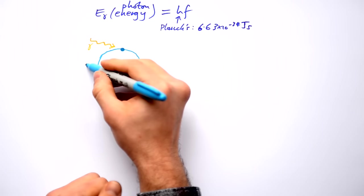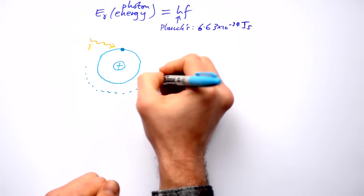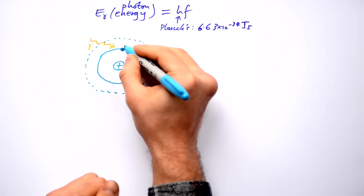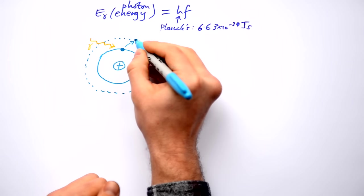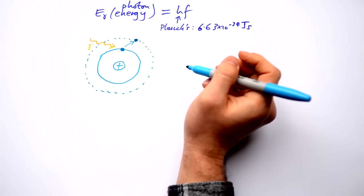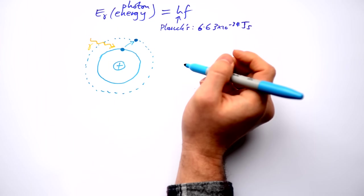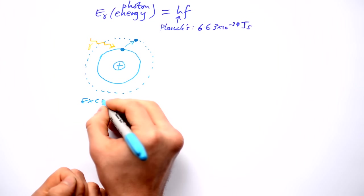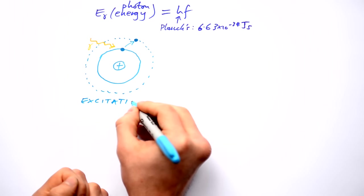If it gets more energy then the electron becomes more excited and it jumps to a shell that is further away from the nucleus. We can say there's gone up an energy level. We call this excitation.